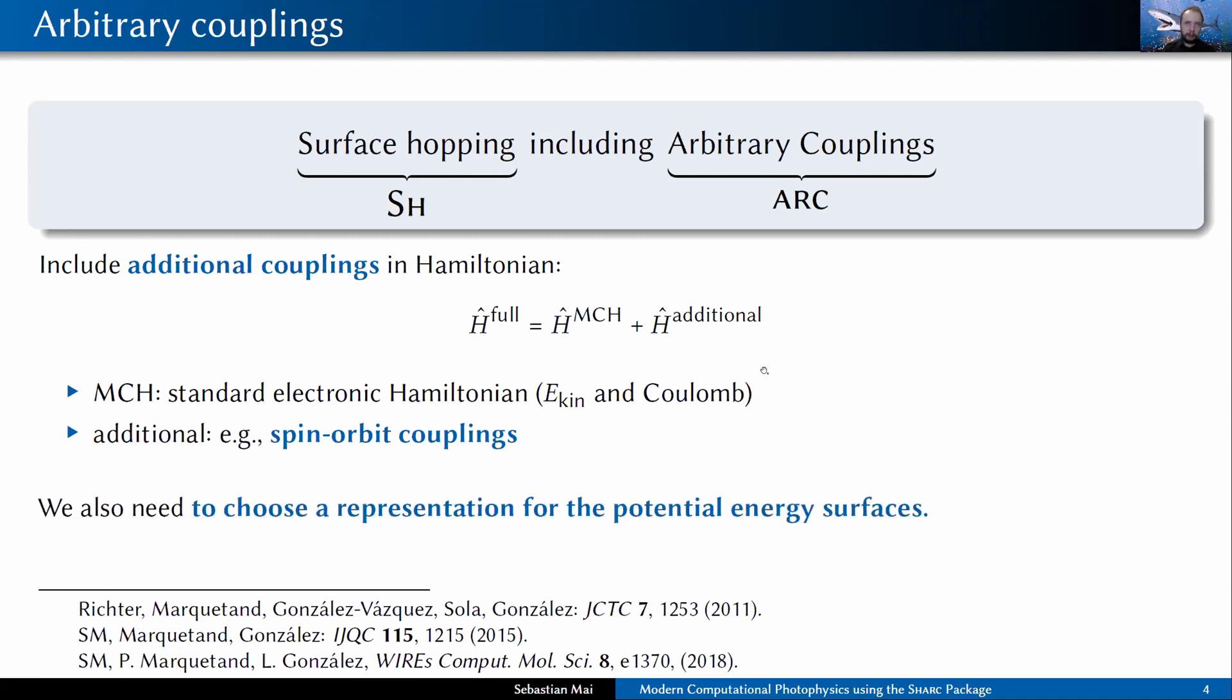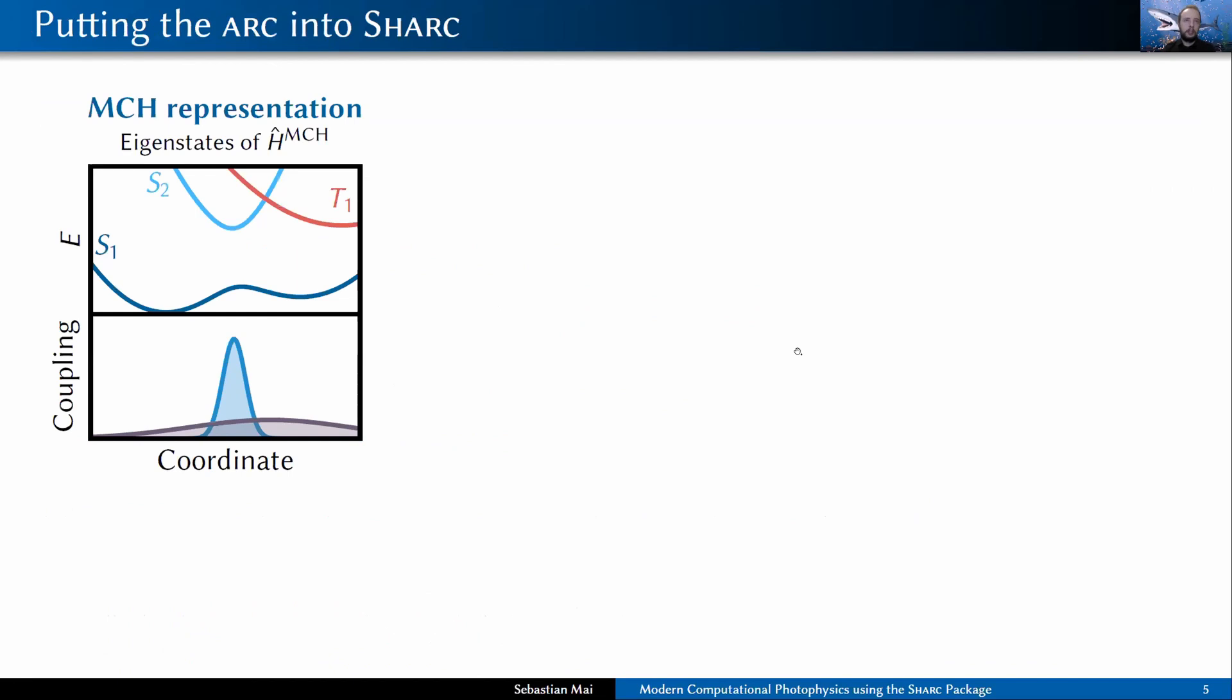Based on this Hamiltonian, we also need to choose a representation for our potential energy surfaces, because we need the potential energy surfaces for doing the dynamics. The most obvious solution would probably be what we call the MCH representation, which is simply the basis of the electronic eigenstates of the standard electronic Hamiltonian that every quantum chemistry software uses, where you have different singlets that show avoided crossings between each other, and then you have states of other multiplicities like triplets that show free crossings and are coupled through delocalized spin orbit couplings.